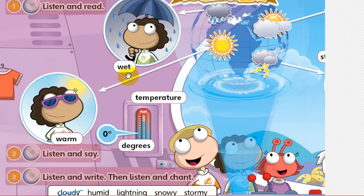The word wet simply means covered by a liquid, whether this liquid is water or any other liquid. For example, if you are walking in the street while it's raining without an umbrella, you will probably have wet clothes. This means your clothes are wet because of the rainy weather.